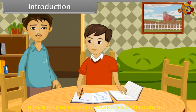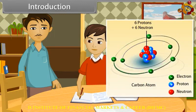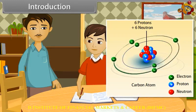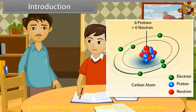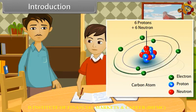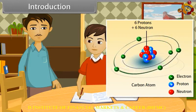Atoms join together to form a molecule. What kind of materials are there in atoms? Atoms consist of electrons, protons and neutrons, and a central core which is called the nucleus. It sounds interesting — can you tell me more? Yes, Rohit. In this lesson, you will study the structure of the atom.